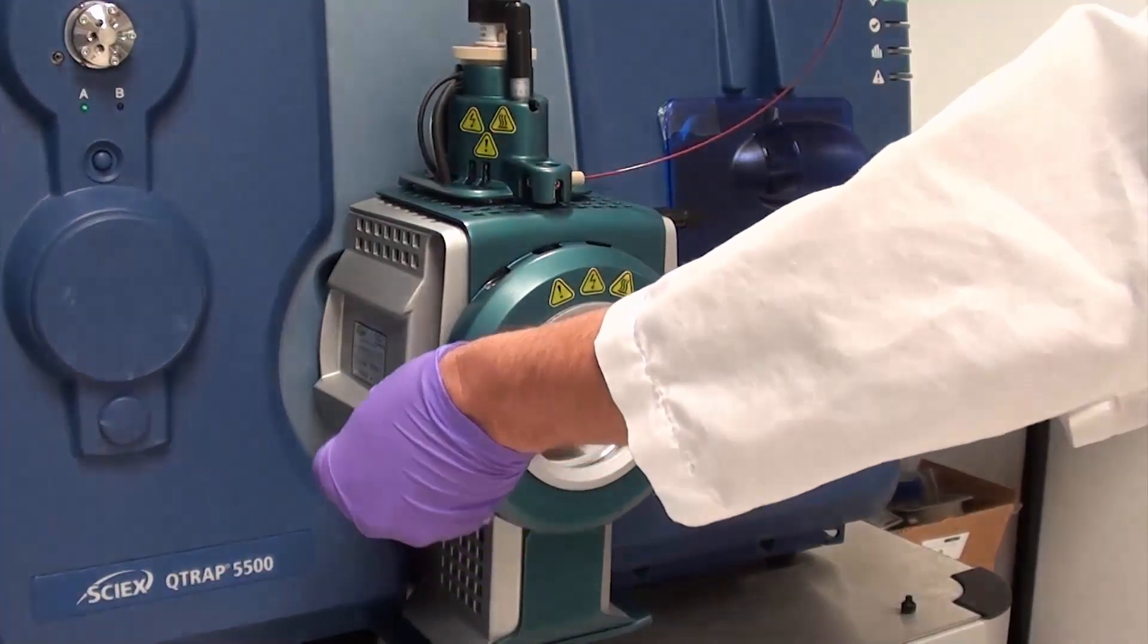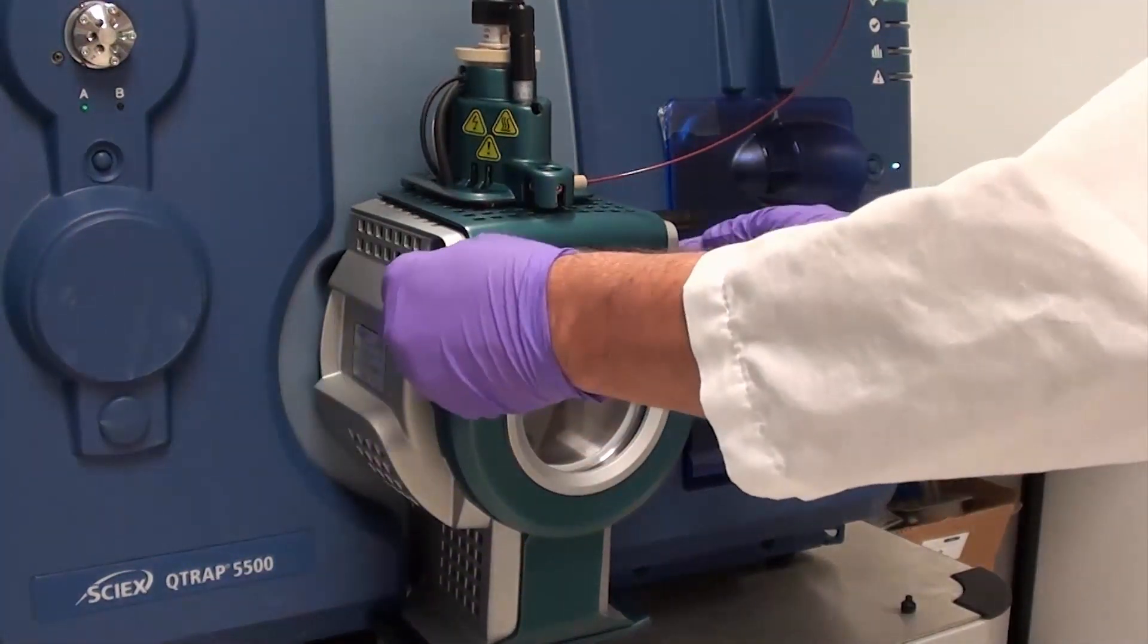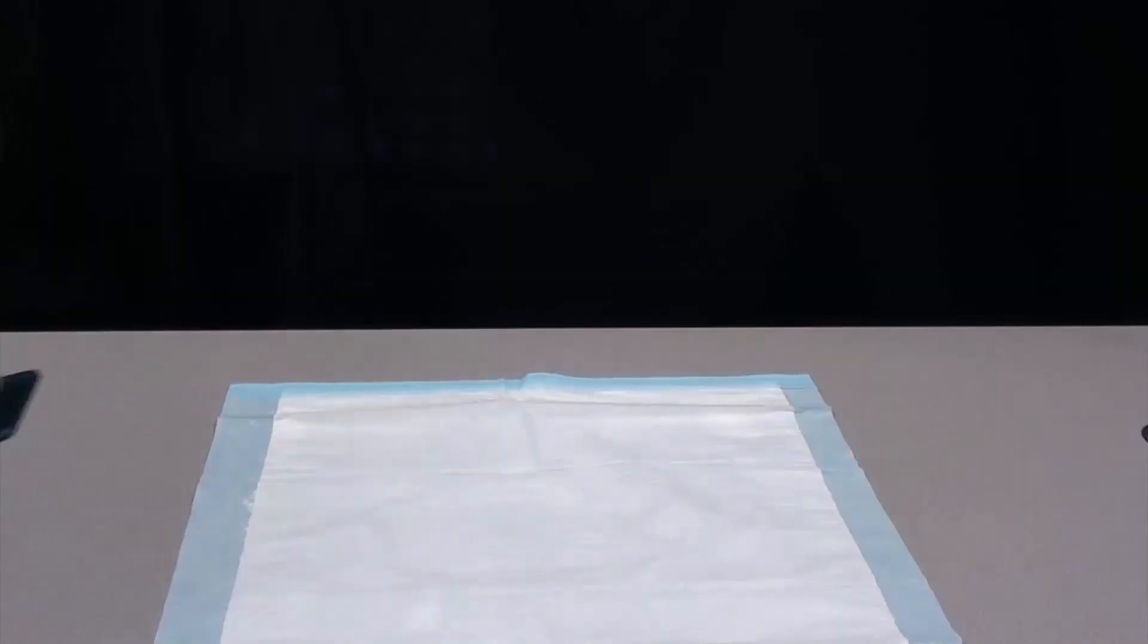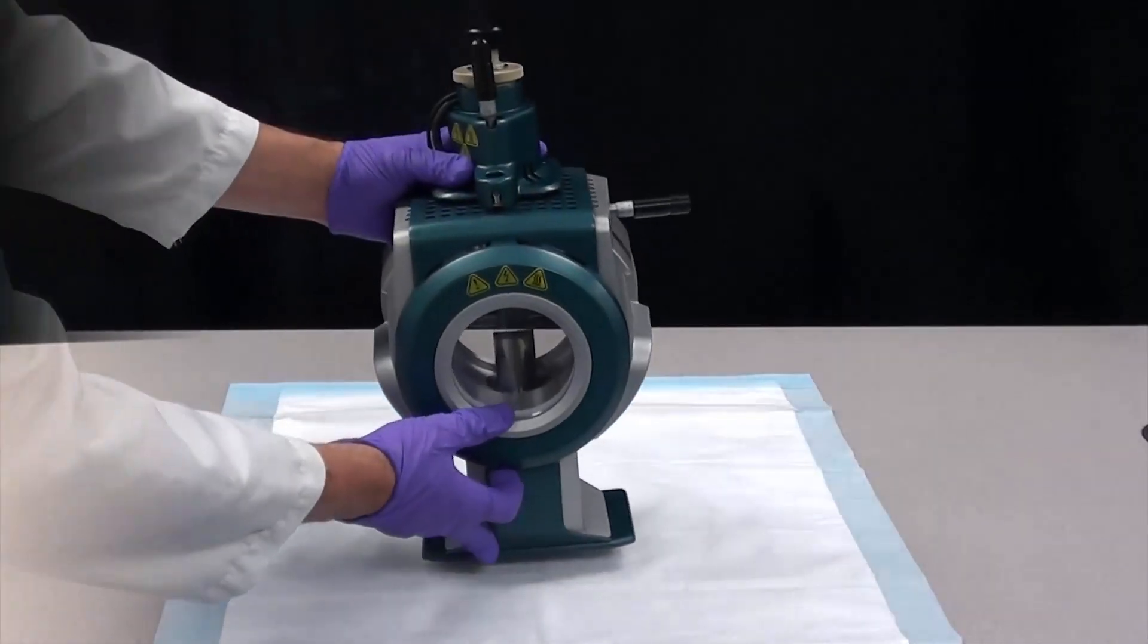Turn the two source latches upward to the 12 o'clock position to release the ion source. Pull the ion source gently away from the vacuum interface. Put the ion source on a clean, secure surface.